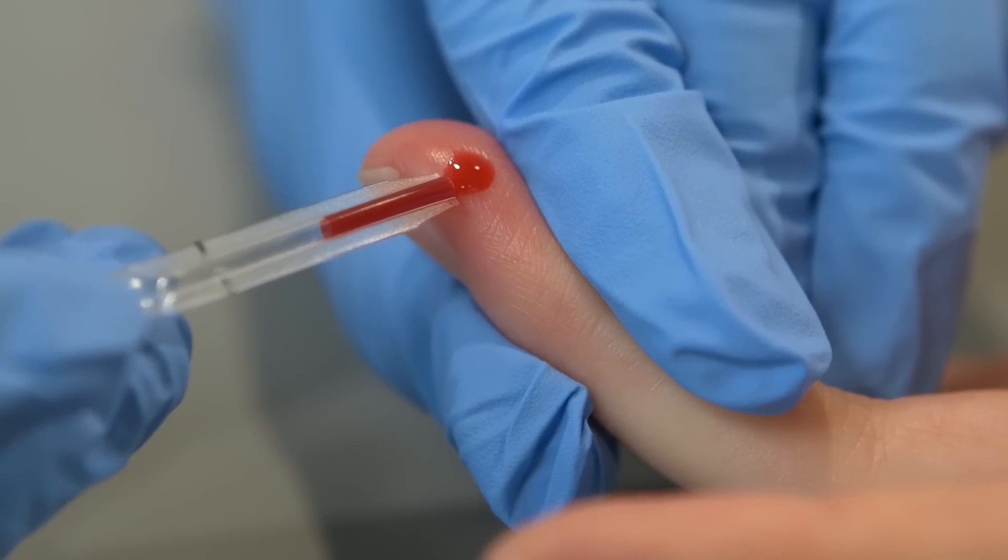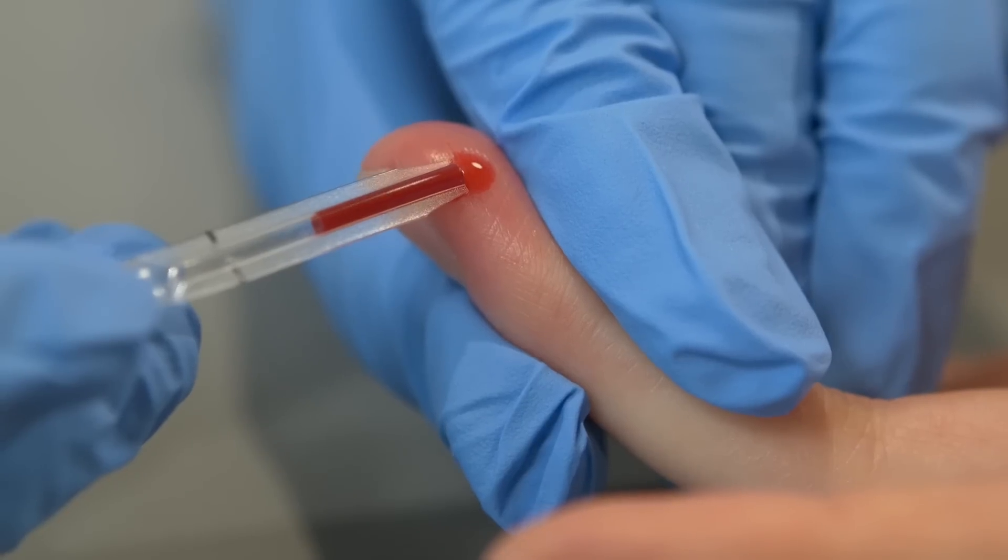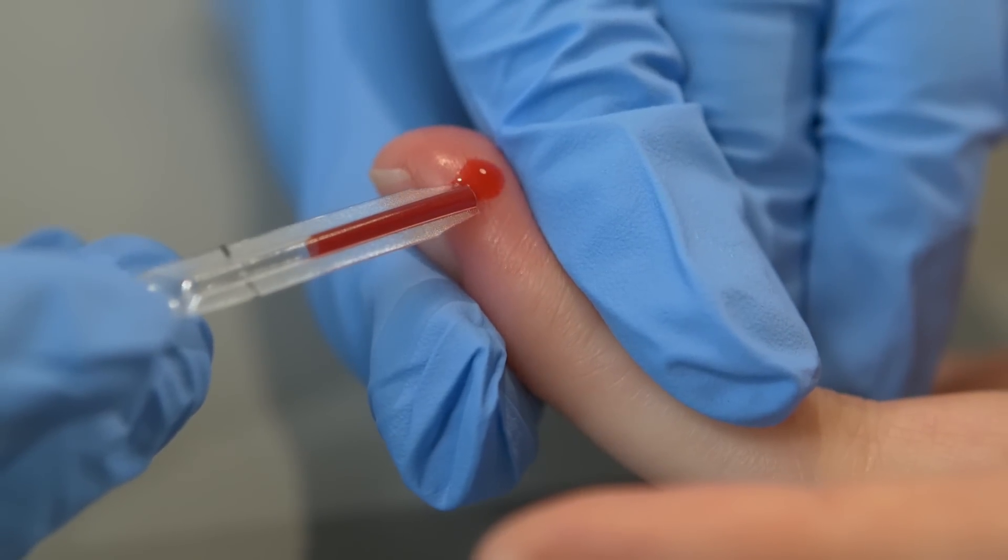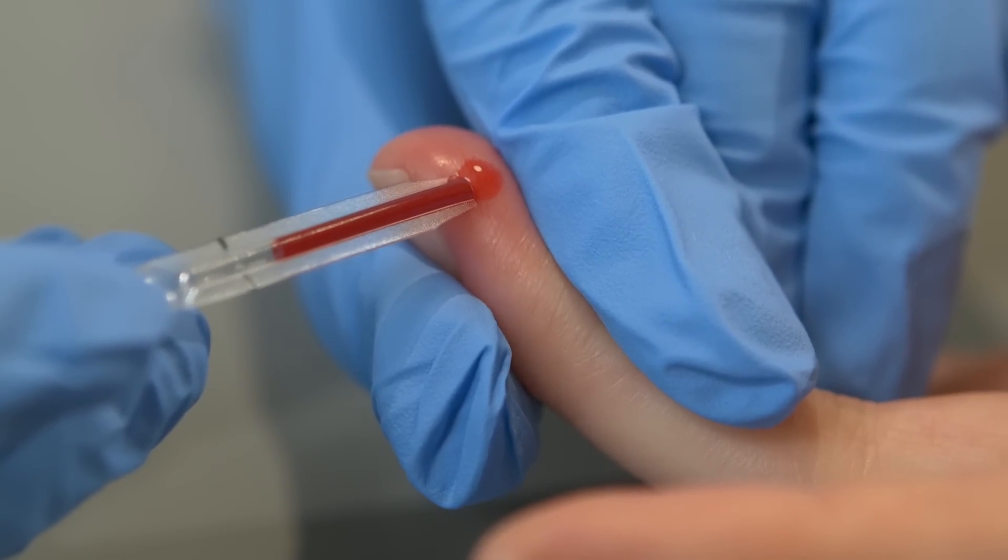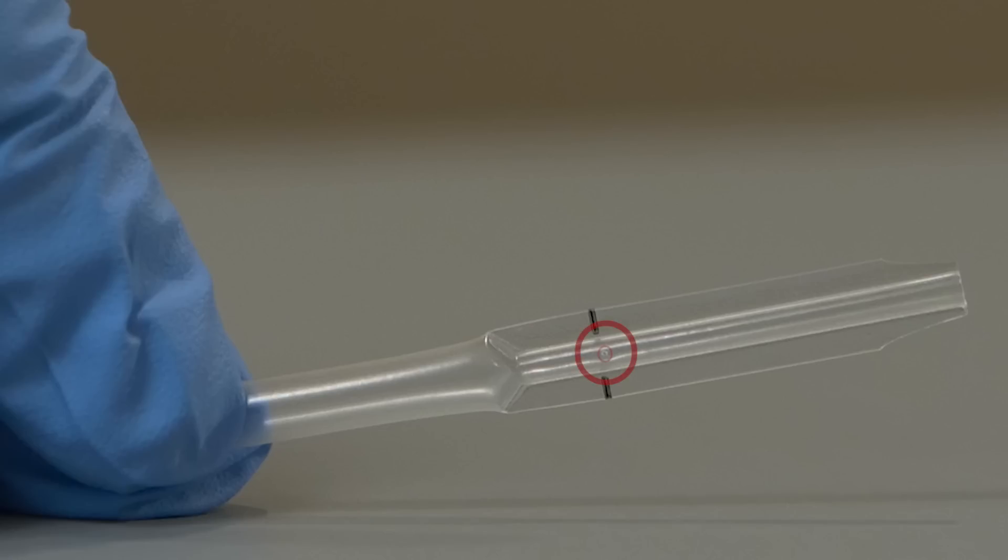Capillary action will automatically draw the blood to the black fill line. Do not squeeze the bulb of the pipette. Hold horizontally and gently, being mindful not to cover the pin-sized hole on the 50 microlitre fill line.